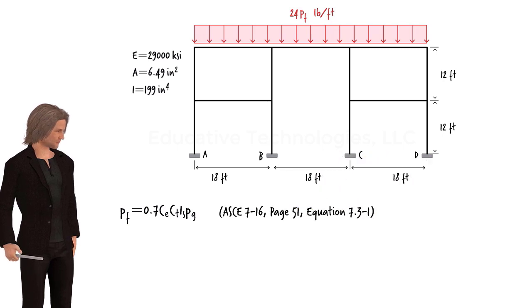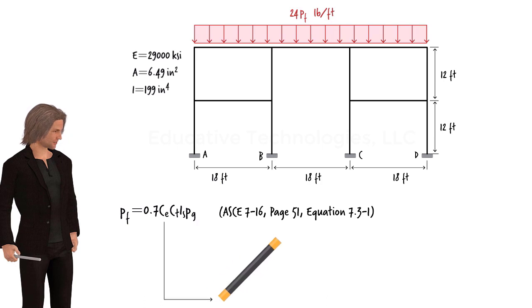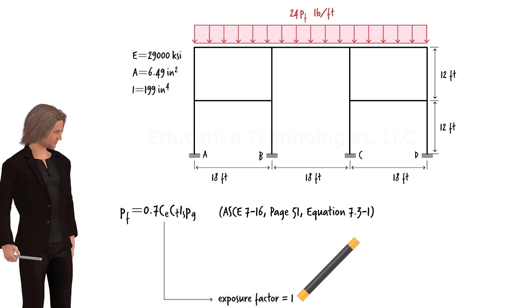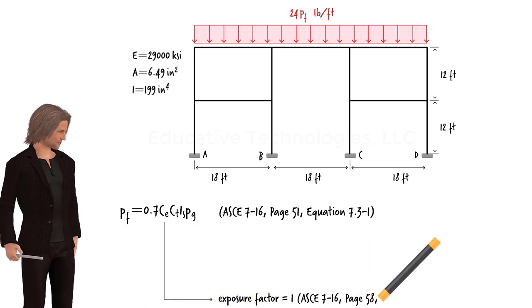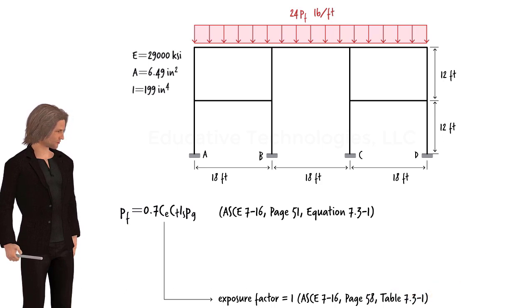The equation is a product of four factors. C-E refers to the exposure factor. It is a measure of the nature of the terrain, location and the exposure of the structure. For a detached single family house located in the suburban area used in this example, the exposure factor is 1.